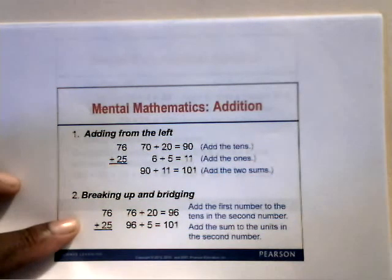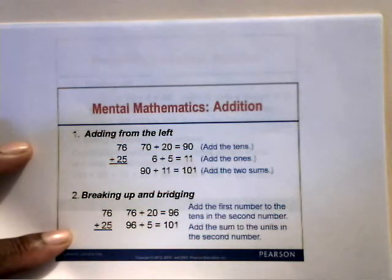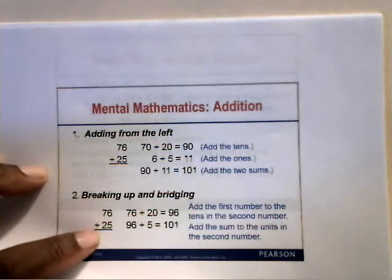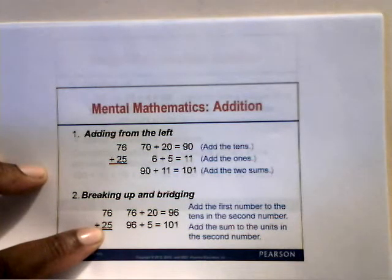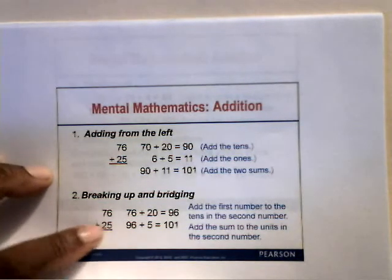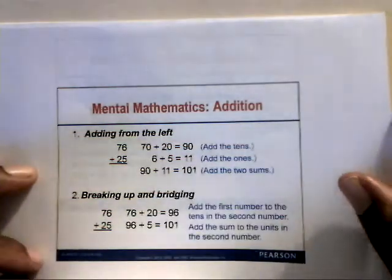The second method is breaking up and bridging. We add the first number to the tens in the second number, then add the result to the units in the second number. For 76 plus 25, we add 76 plus 20 — the tens part — which is 96. Then 96 plus 5, the ones part, gives us 101. So 76 plus 25 equals 101.